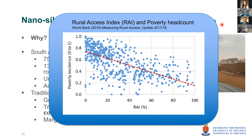The World Bank defined a Rural Access Index. Their study of various countries and regions shows that as the rural access road index drops from 100 to zero, poverty incidence increases. This links to something you should all know: good roads support a good economy. If you have good transportation networks, the economy can grow; if you don't, it cannot. That is another reason why this work is so important.